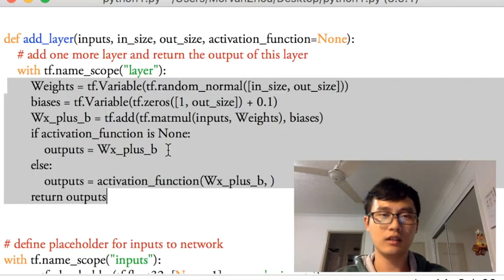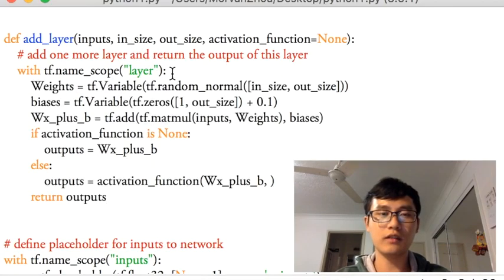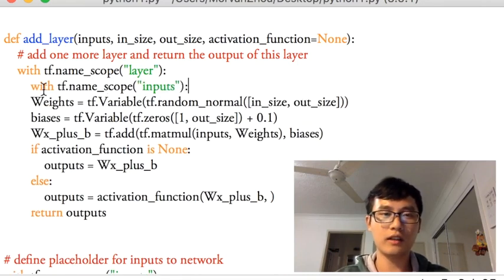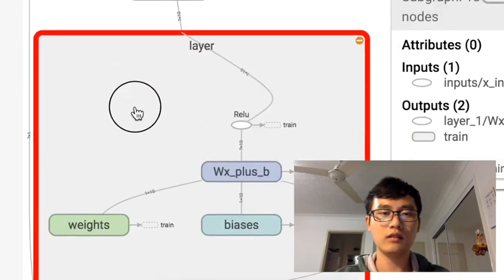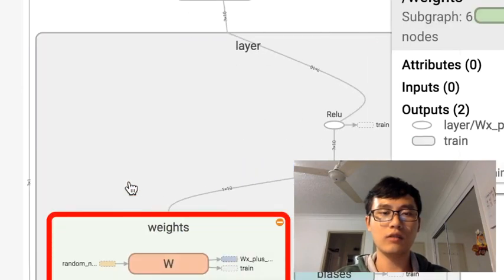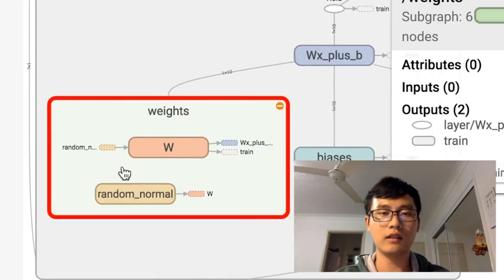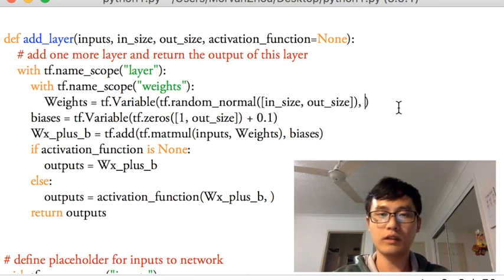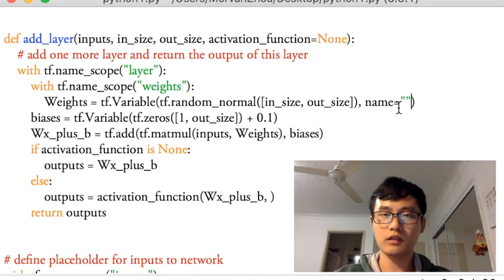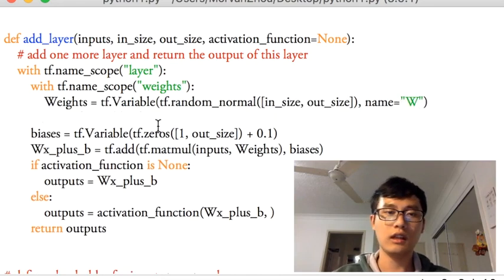For the individual, we could define another name_scope for the weights. That is to show in here, the weights. In here, the weights. And if we open the weights, we could have another thing over here. We can define other things like give the weights a name. For example, I can give the weights a name of big W.